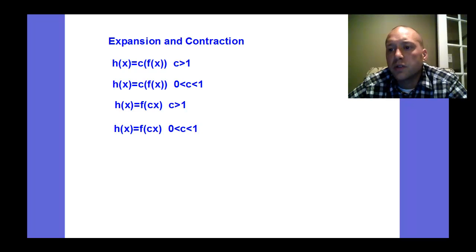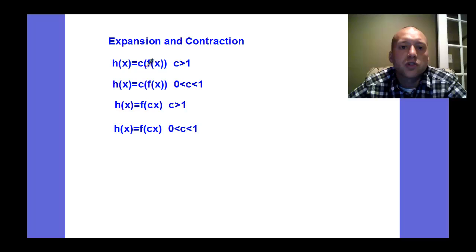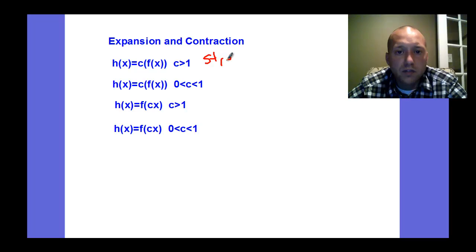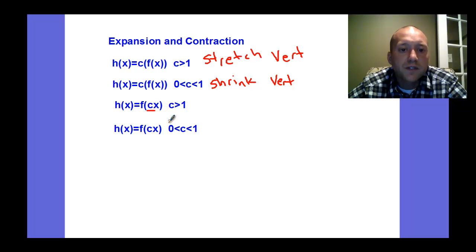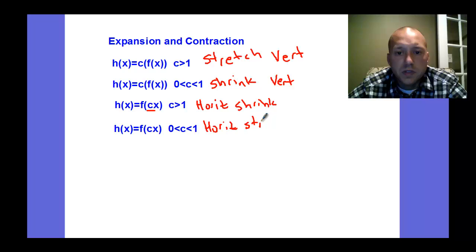Expansions and contractions. So the number c, in our textbook they call it c, how c is applied to the function. If it's multiplying to the function, outside of the function, it's going to, and it depends if it's greater than 1 or if it's some kind of fraction, it is a kind of shrink or stretch. So if it's greater than 1, it's going to stretch the graph, stretch vertically. If it's between 0 and 1, it's actually going to shrink the graph vertically. Now if it's applying to the x first, it's horizontal, and it's still opposite what you think. So greater than 1, you think it would stretch it, but it actually is a horizontal shrink. And then if it's a decimal, it's actually a horizontal stretch.